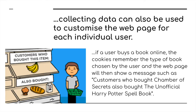A good example here: customers who bought this item might have also bought this item. For example, somebody who bought the Harry Potter Chamber of Secrets might also like to buy the unofficial Harry Potter spell book. There's a nice little cartoon to illustrate that — with bananas, somebody who bought bananas might also have bought muffins, bread and milk.